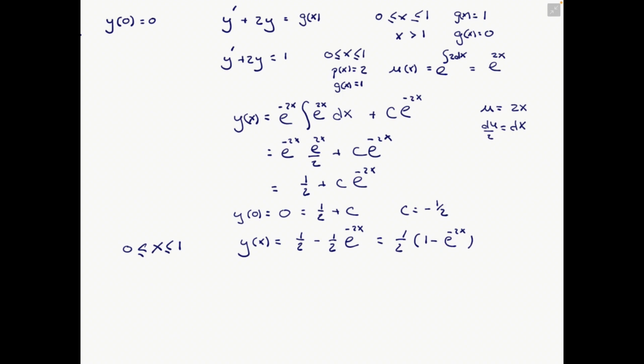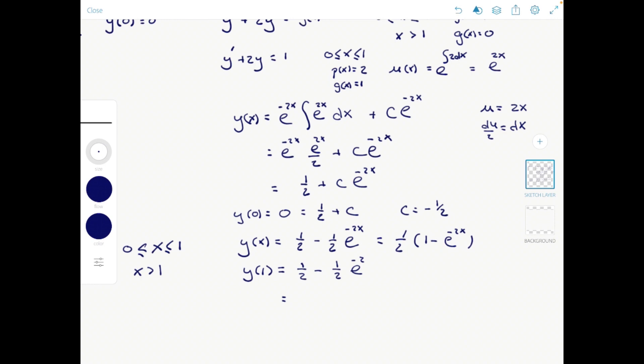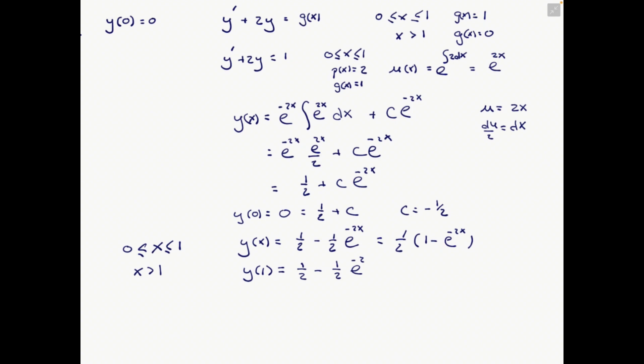For the case x greater than 1, we need the boundary value. We compute y of 1 equals one-half minus one-half e to the minus 2. This is the value we must retain as the initial condition for the second interval.